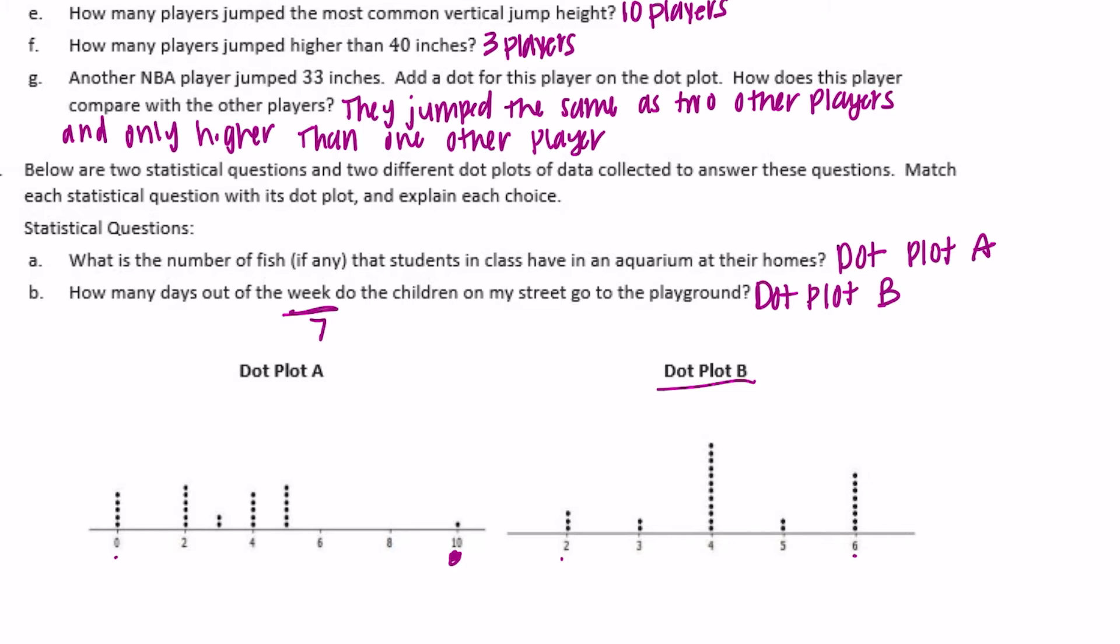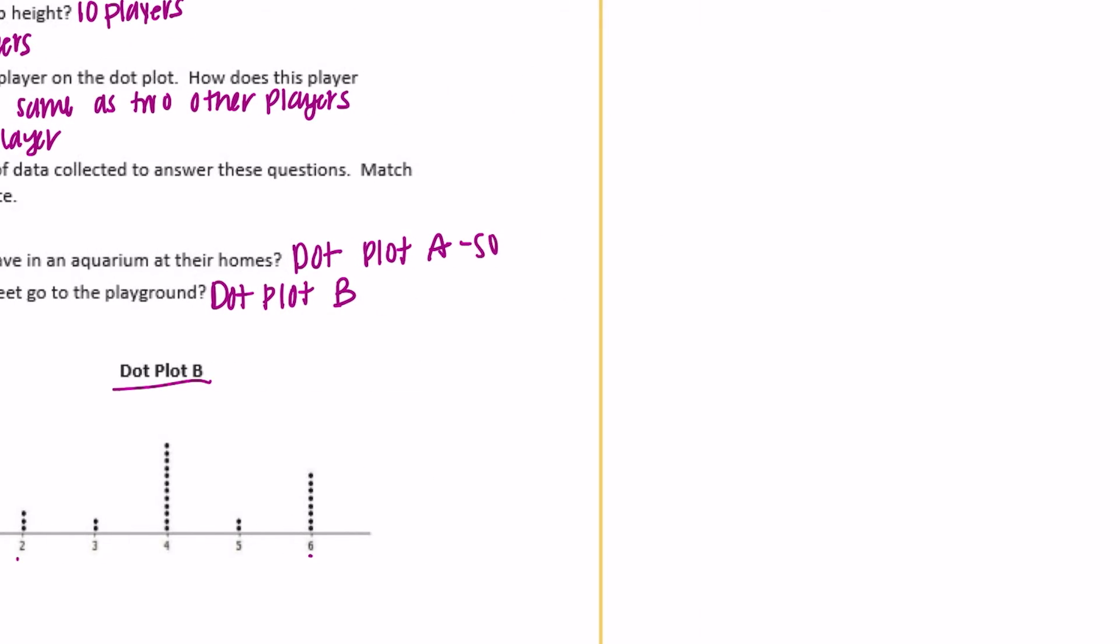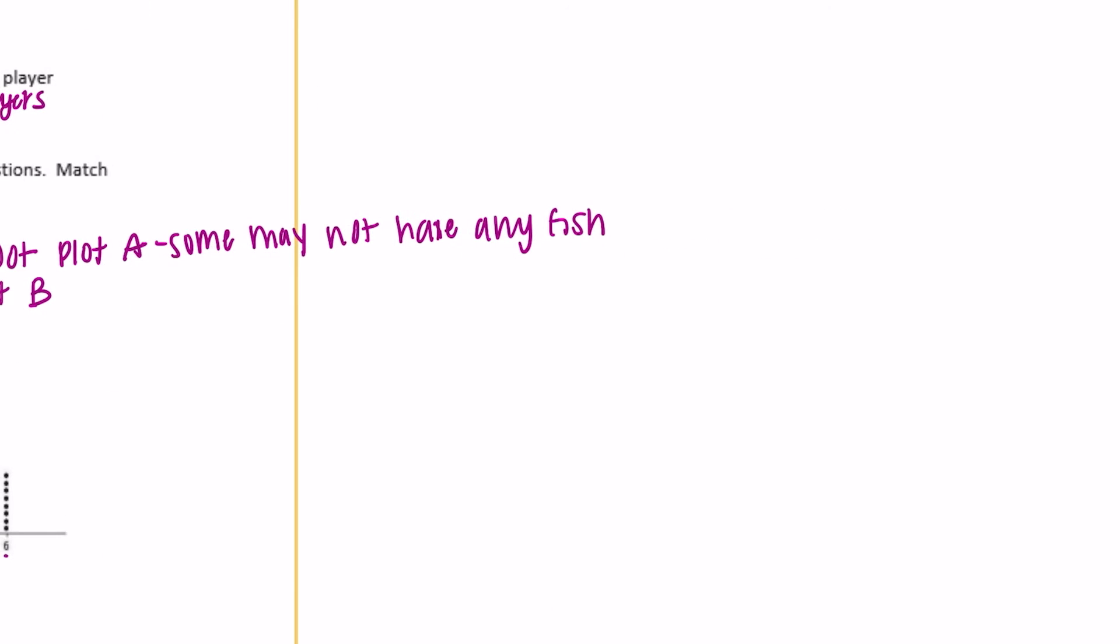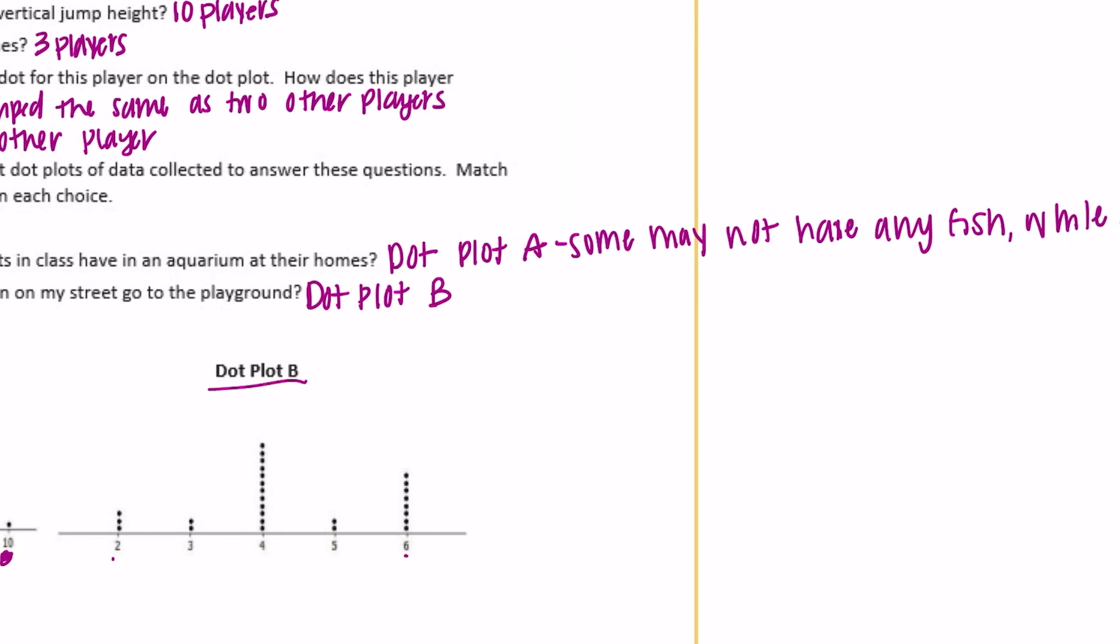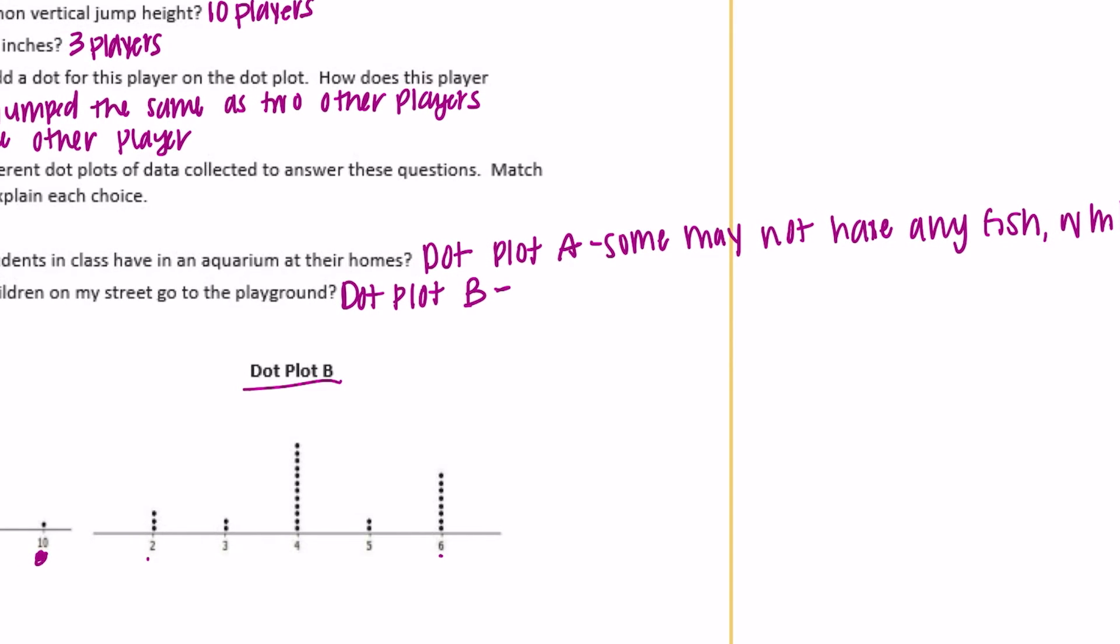Explain each choice. So kind of what we said before: some may not have any fish, while someone else has ten. And then dot plot B makes sense because it ranges from two to six days, six days at the playground.